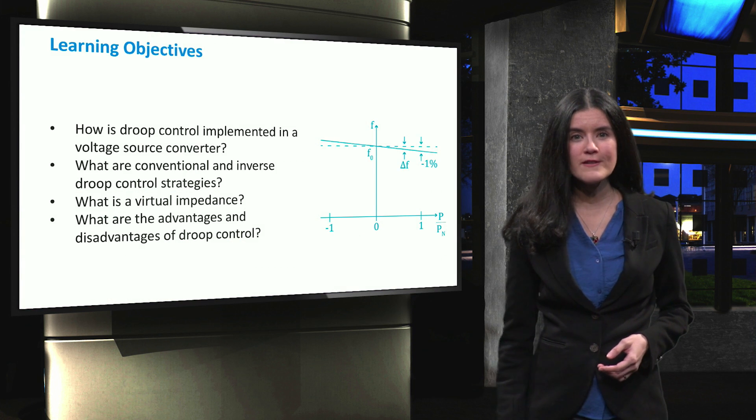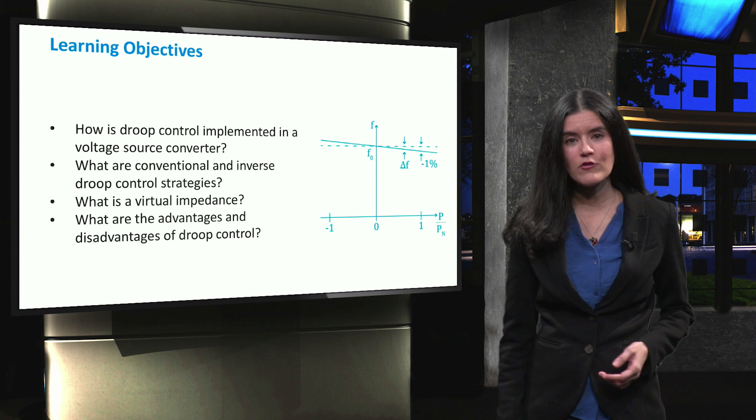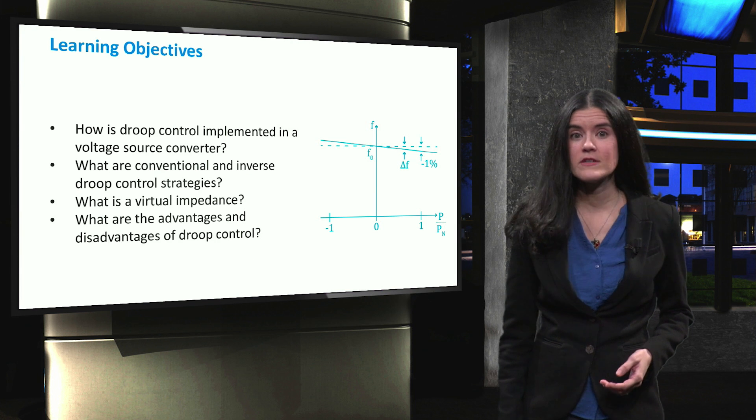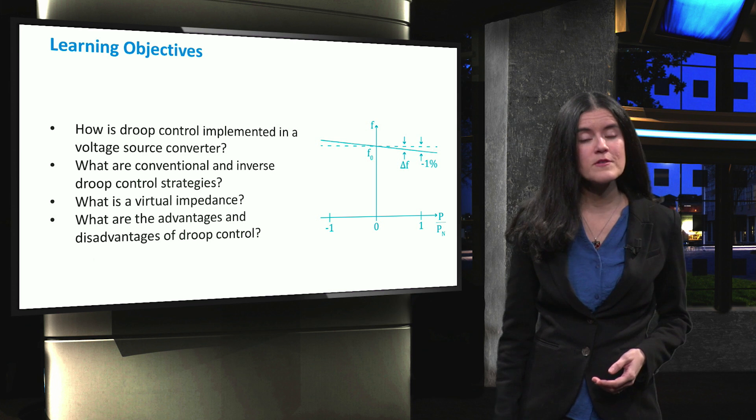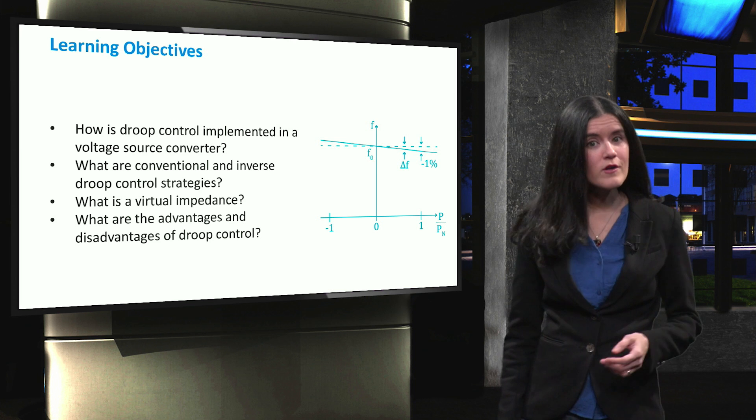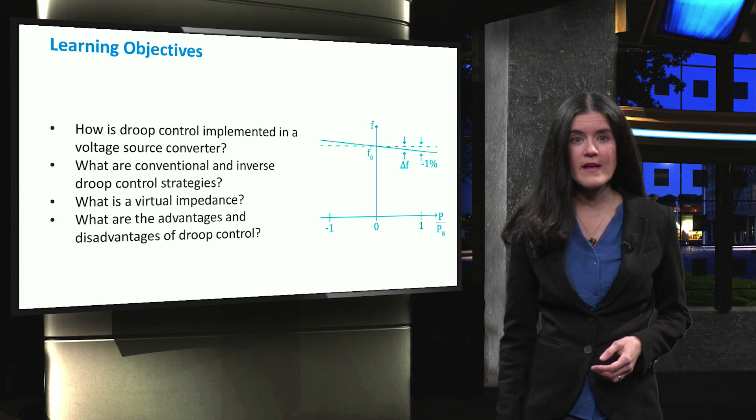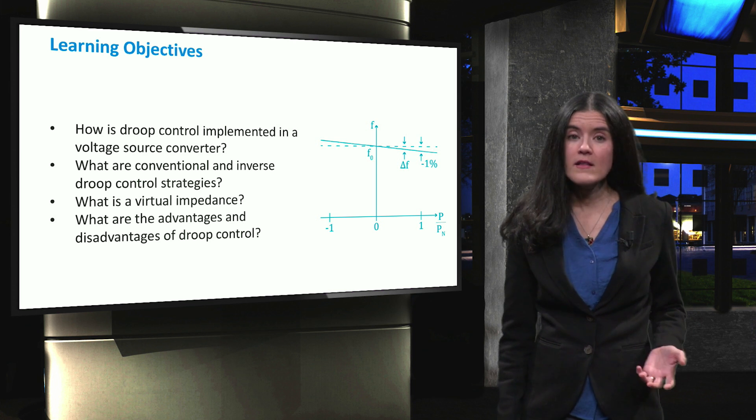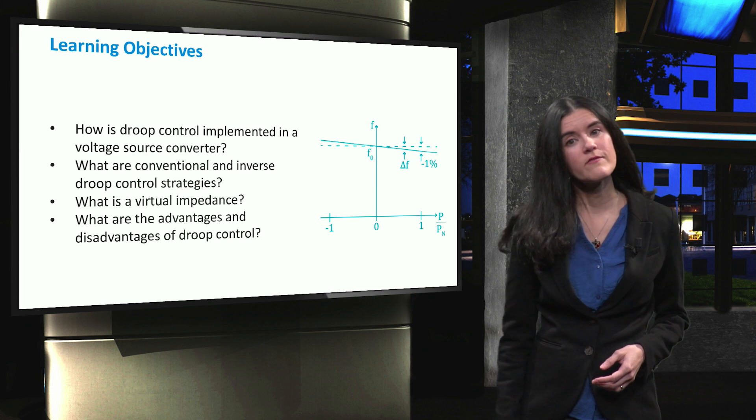In this video, we will focus on the implementation of droop control in voltage source inverters, the difference between conventional and inverse droops, and the role of having a virtual or fictitious impedance. Moreover, we will have a look at the disadvantages of droop-based methods and the standards when it comes to voltage and frequency deviations.